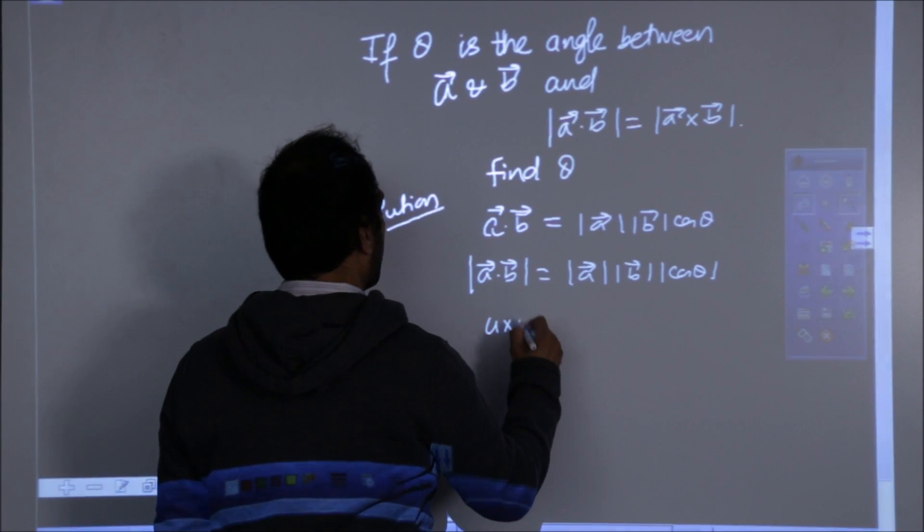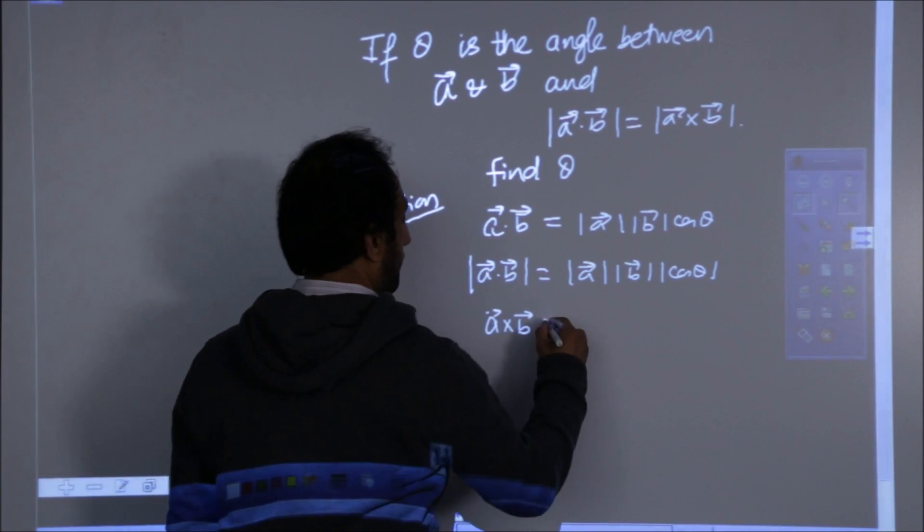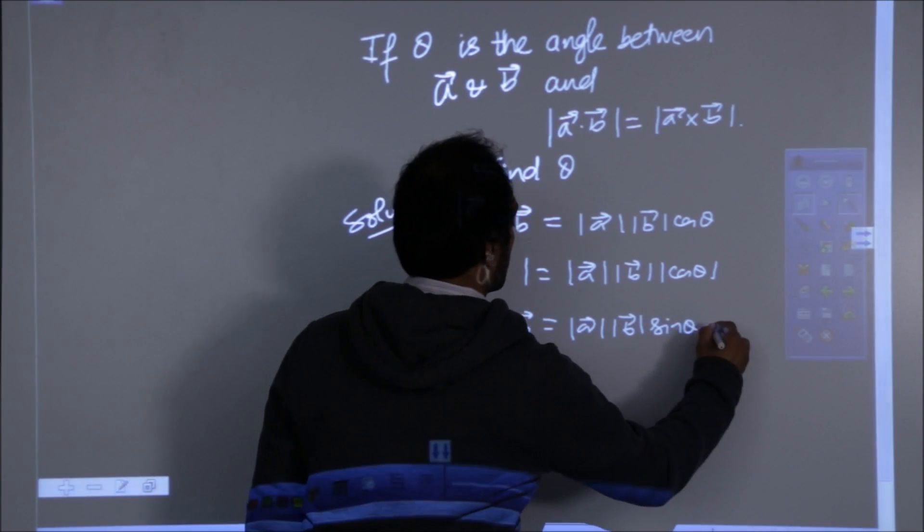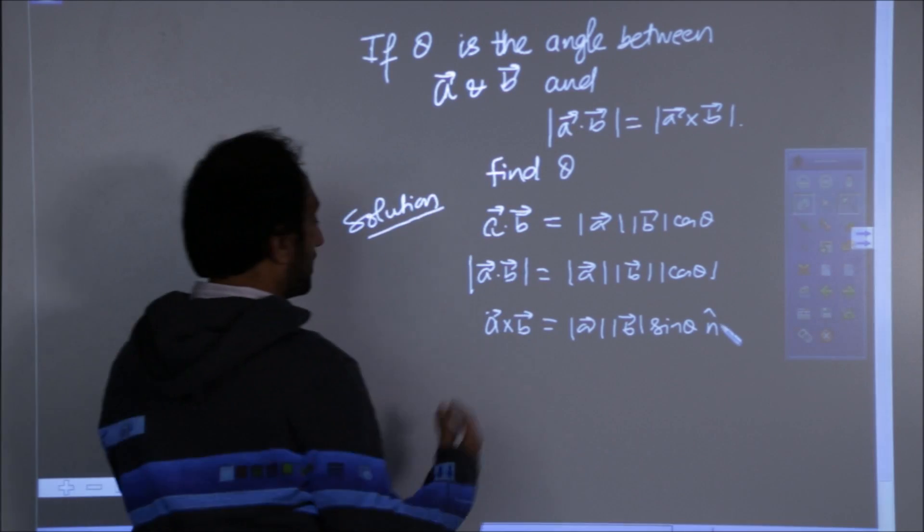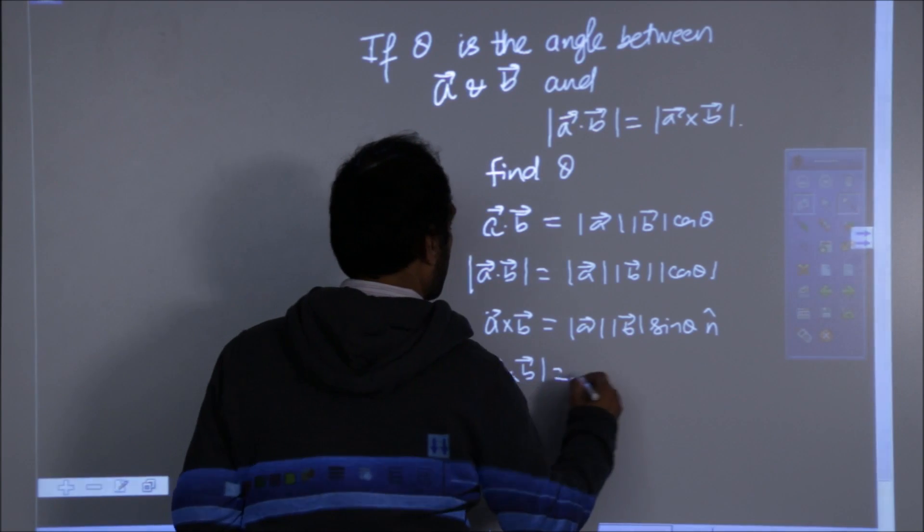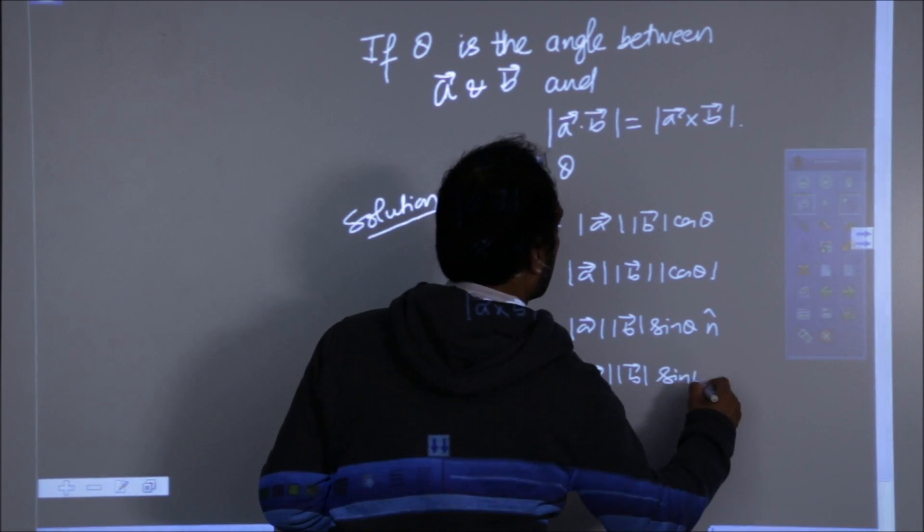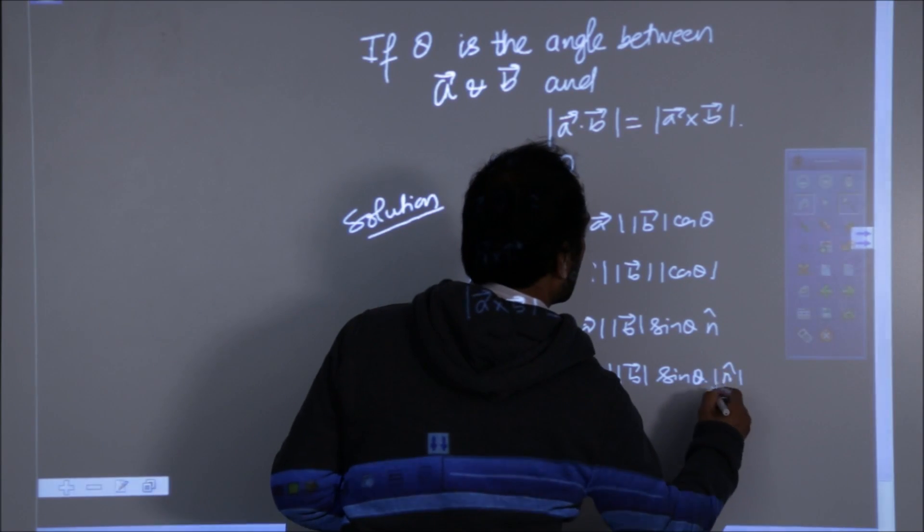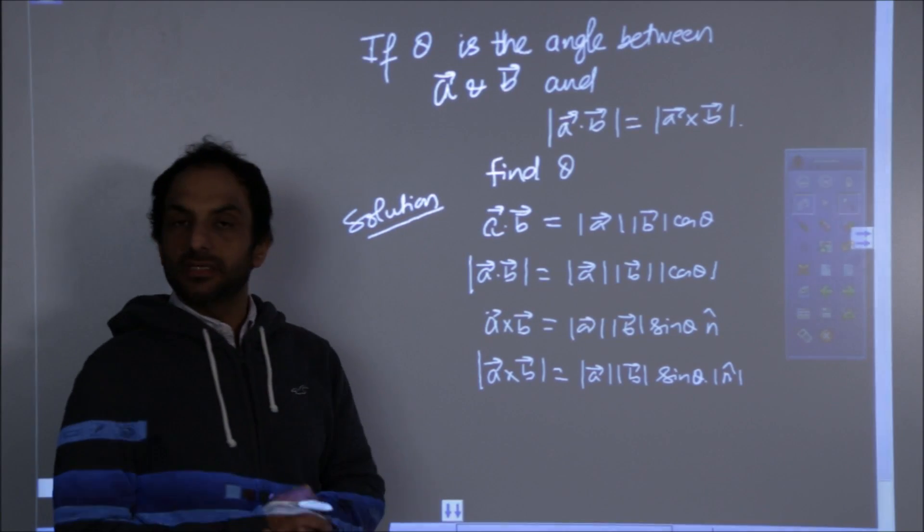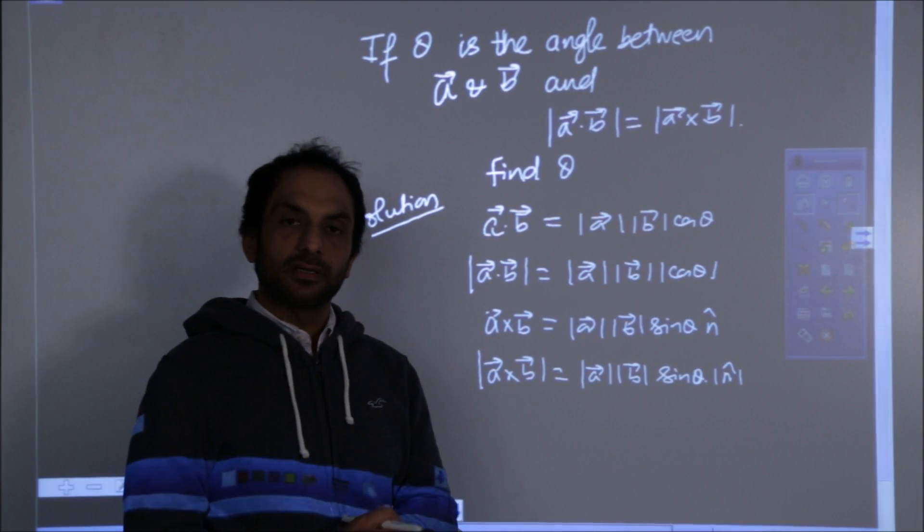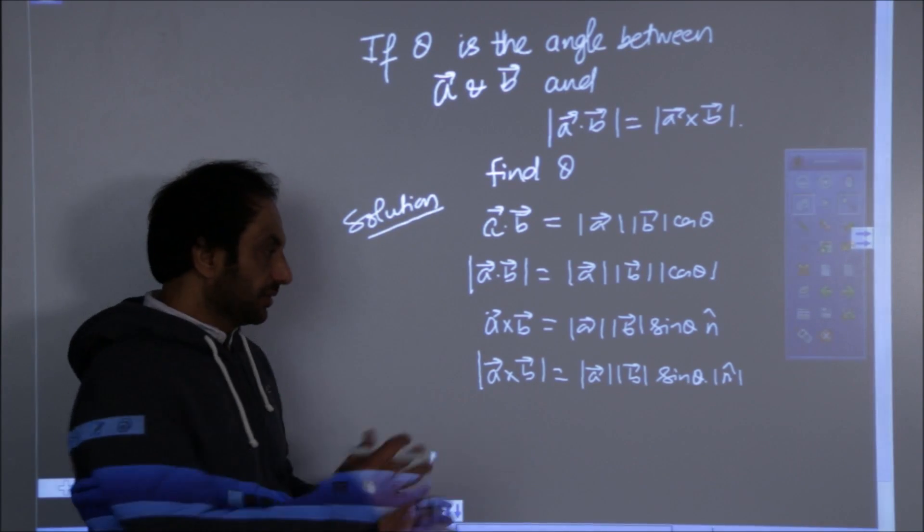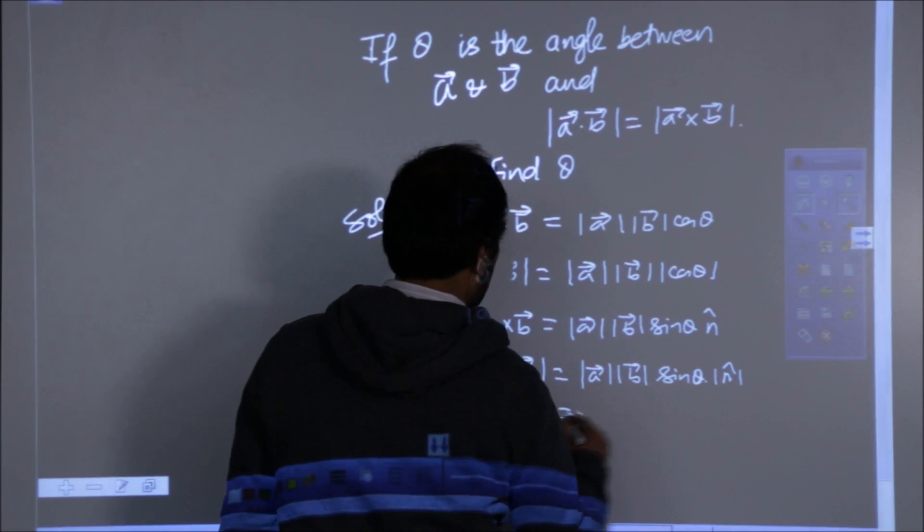What is a cross b? mod a mod b sin theta into some unit vector perpendicular to a and b. What is mod of a cross b? Why we are not putting mod on sin? Because there is no need. Theta belongs to zero to pi and in both the quadrants sin is already positive so there is no need to put mod here.